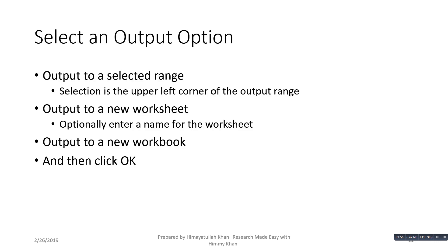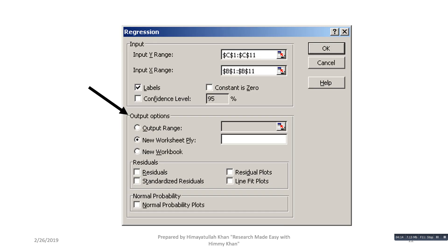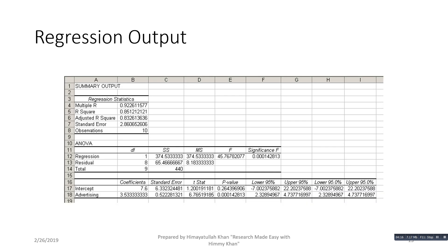For the output option, you can select a range — the selection is the upper-left corner of the output range — or output to a new worksheet, or output to a new workbook. Then click OK. When you click OK, you will get the regression output.